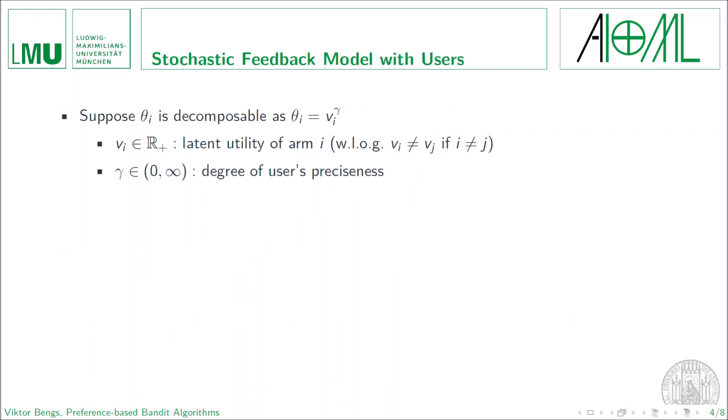Now in one of our works, we were interested in a setting where the feedback is generated by user. What we then assumed is that the strength parameter of each arm is decomposable into two terms. One is the latent utility of an arm representing its appeal. The other is the degree of the user's preciseness in making the choice, which we denote by gamma. And why do we call this parameter gamma the degree of user's preciseness?